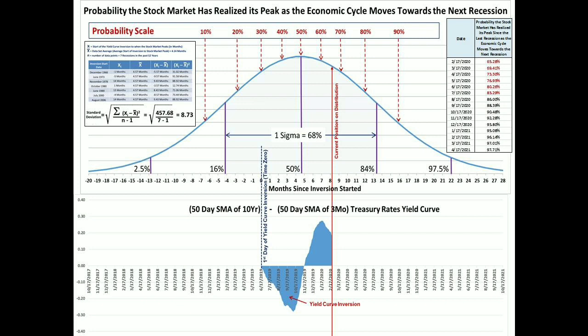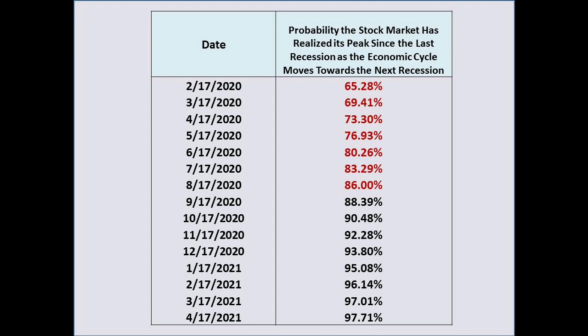Here is the table of the probability distribution for this major economic event. The probability percentages colored red indicate the most likely timeframe that the market will peak and then begin its major decline as we move into the next recession. Based on this probability distribution, it is almost guaranteed that the stock market will peak and then fall significantly before the year 2020 is over.